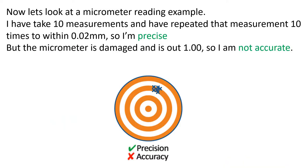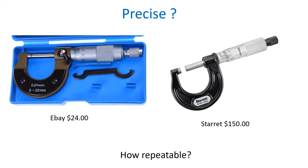Let's look at a micrometer reading example. I've taken 10 measurements, repeated 10 times within 0.02 mm of nominal size — so I'm precise. But the micrometer is damaged and out by about 1 mm, meaning I'm not accurate. I have precision but no accuracy.